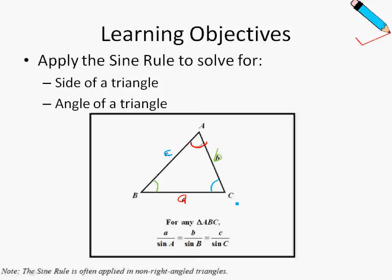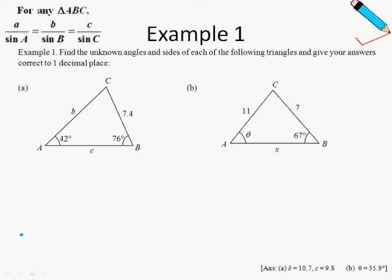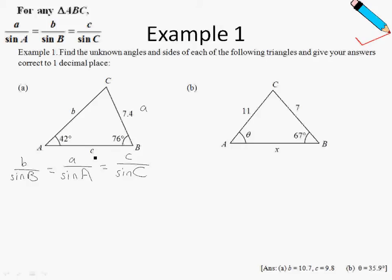Let's look at some practical examples. In example number 1: find the unknown angles and sides of each of the following triangles, giving answers correct to one decimal place. First, let us write out the sine rule: B over sine B equals A over sine A. In this case, 7.4 is my small letter a because 7.4 is directly opposite angle A. This can also be written as C over sine of angle C, but there's no need to work that out for now — we are just interested in the first two ratios.